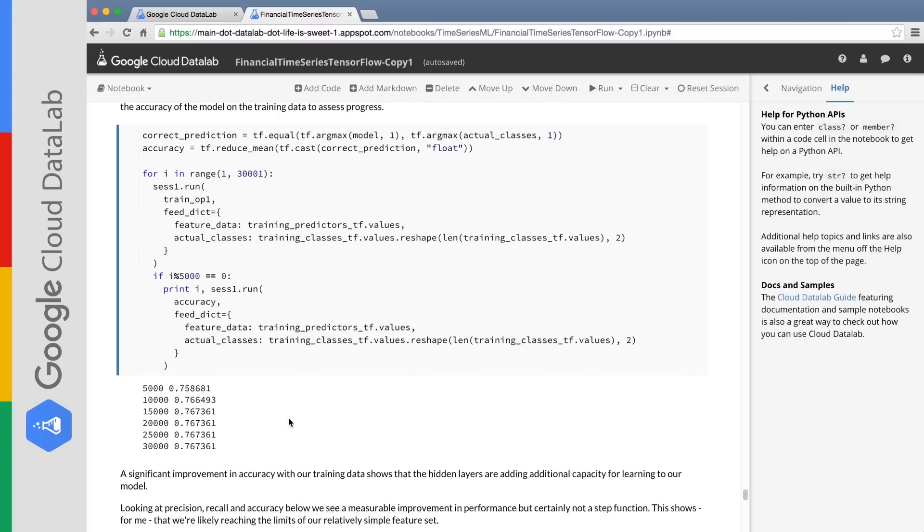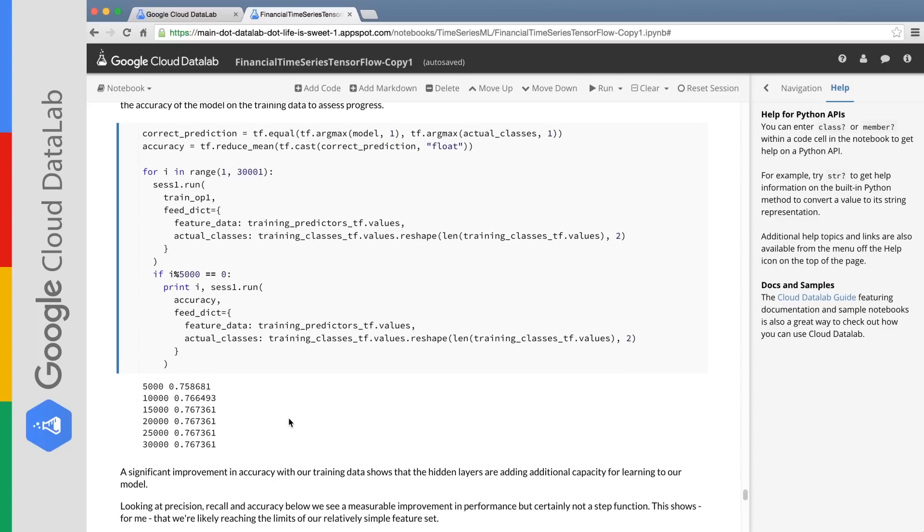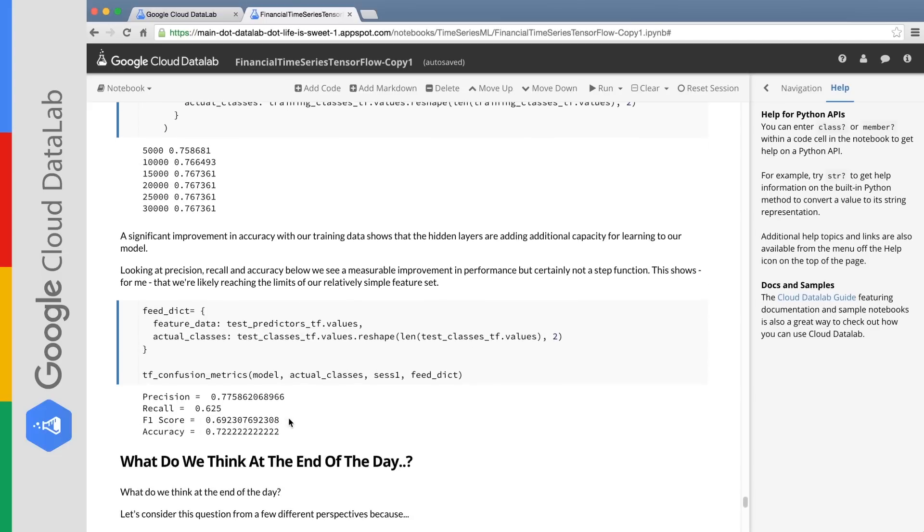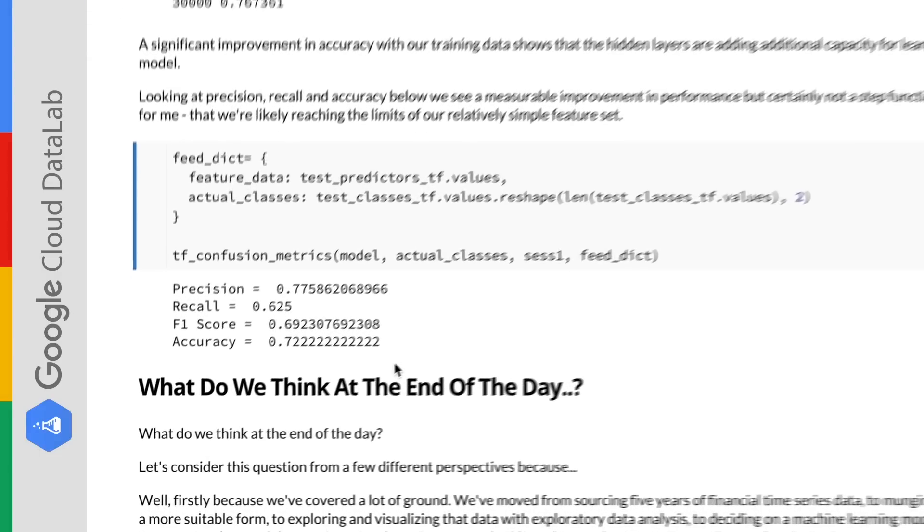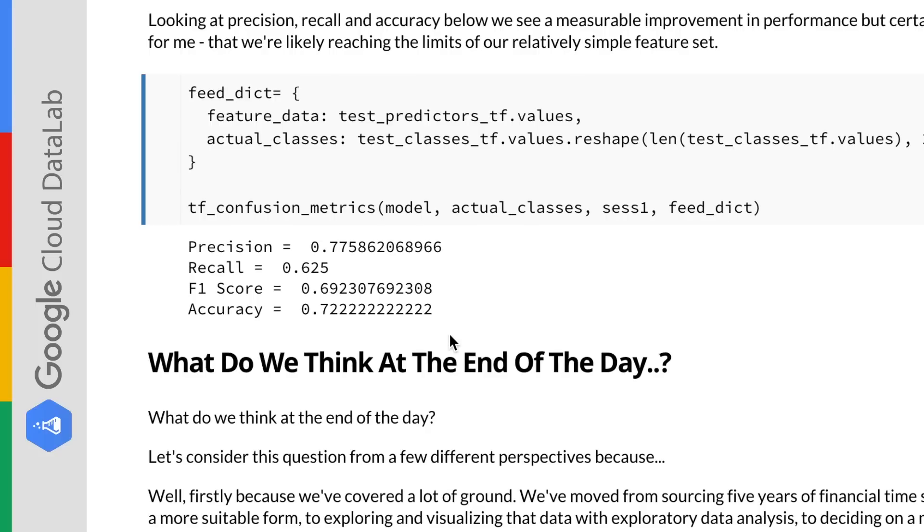Let's again train our data. With this model, we see an accuracy of around 77% on our training data. Now let's take a look at the performance of our neural net. We see an accuracy of 72.2% and an F1 score of 0.692.